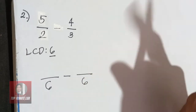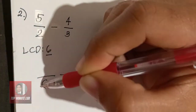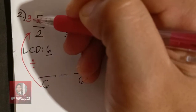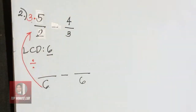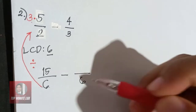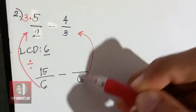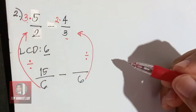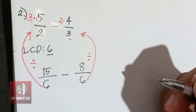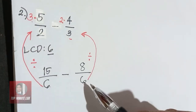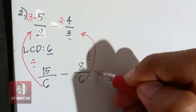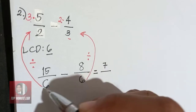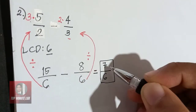Same process: 6 divided by 2 gives 3. Then 3 times 5 gives 15. Next, 6 divided by 3 gives 2, and 2 times 4 gives 8. You can immediately subtract using the rule for subtracting similar rational algebraic expressions: 15 minus 8 gives 7. Copy the denominator 6. The answer is 7 over 6.